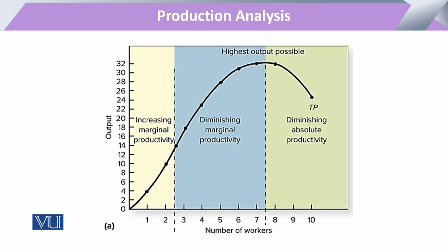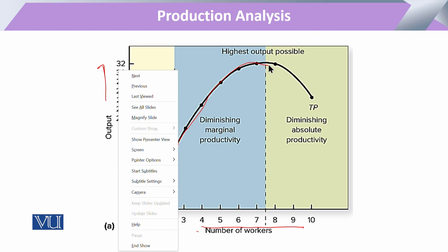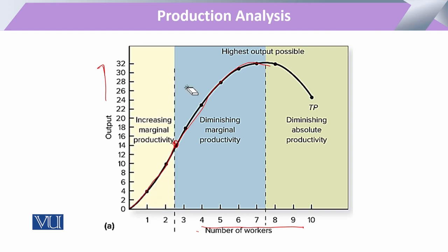Usi tarah se hamare paas marginal product aur average product ke table ke column maujood hain jo hum next module mein explain karenge. Agar hum in points ko graphical shape mein explain karein, to number of workers variable x-axis pe show kar rahe hain aur output y-axis pe maujood hai. Ek point tak jaate jaate humara total production was increasing at an increasing rate, aur us point ke aage total production again increasing tha but the rate of change was slower. Phir ek point pe yeh stagnant ho gaya, aur uske baad input increase hone ke saath-saath cost bhi increase ho rahi hai — lekin total production decline karti chali jaati hai.